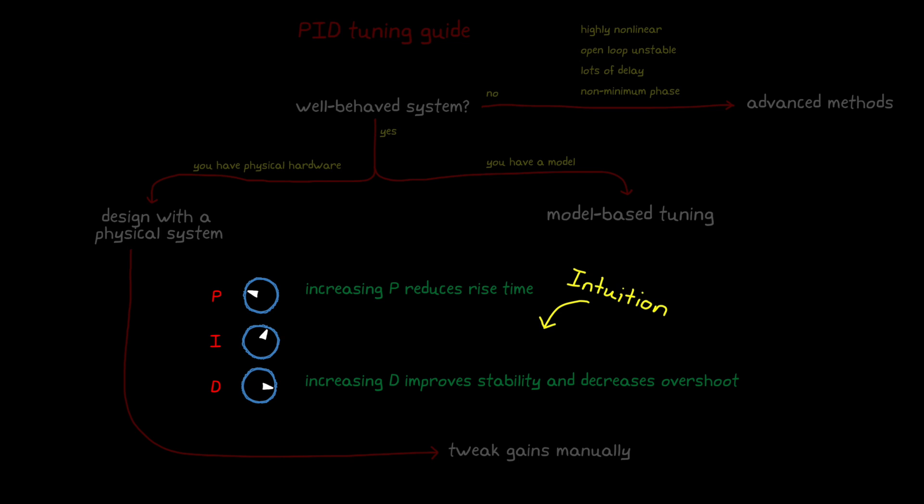I've put a link in the description below for a handy chart that describes how the P, I, and D terms each affect different requirements.